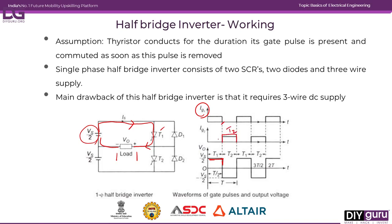At this instant, I am turning on T2. So thyristor T2 is turned on and simultaneously T1 is turned off. When T2 is conducting, current flows from the source through the negative terminal of the load, and reaches the negative of the battery. So the voltage will be in the negative direction. Again when T1 is turned on, the voltage shifts to positive, and this cycle repeats.